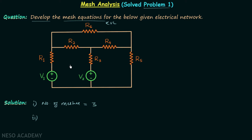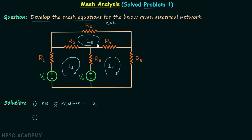In step number two we assign mesh currents. Let's say in mesh number one current I1 is flowing, in mesh number two current I2 is flowing, and in the third mesh current I3 is flowing. As explained in the previous lecture, it is good to take the clockwise direction. So I1, I2, and I3 are all flowing in the clockwise direction.